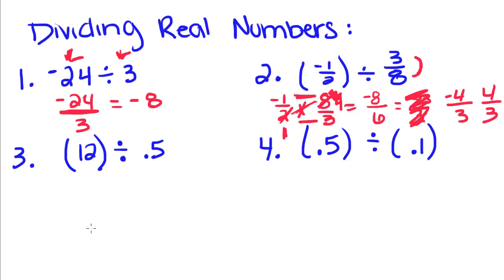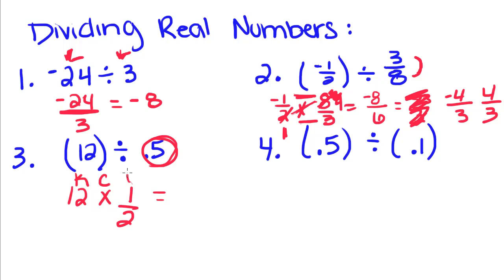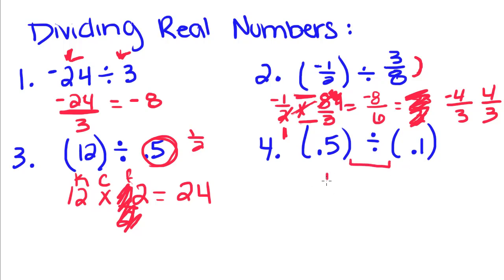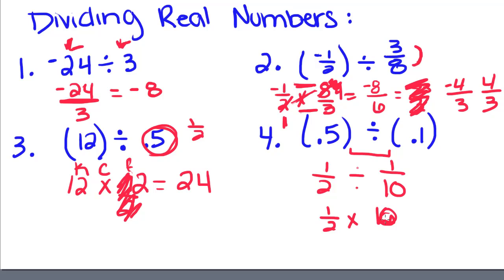When we have a decimal, sometimes it's easiest to write it as a fraction. We take 12 divided by 0.5 — since 0.5 is the same as 1/2, we use keep-change-flip: keep 12, change to multiplication, flip 1/2 to get 2, so 12 divided by 0.5 equals 24. Similarly, 0.5 divided by 0.1 is written as 1/2 divided by 1/10. Using keep-change-flip and multiplying across, we get 10 over 2, which reduces to 5.